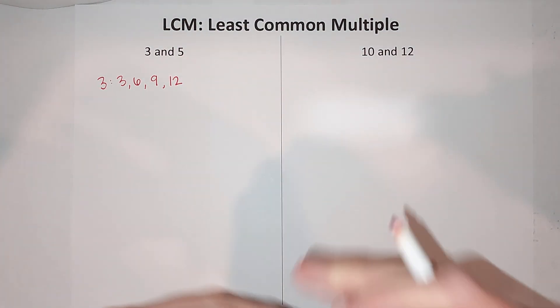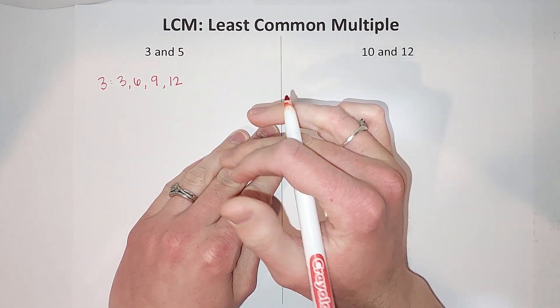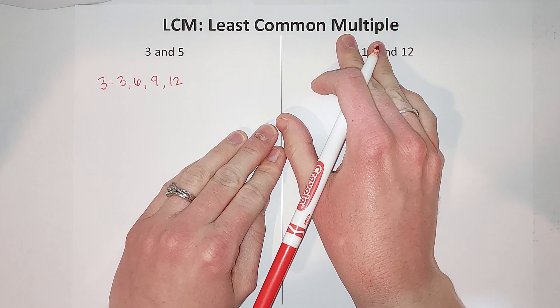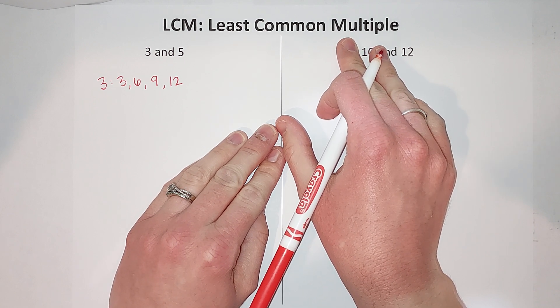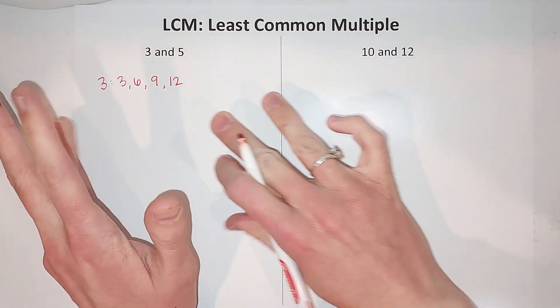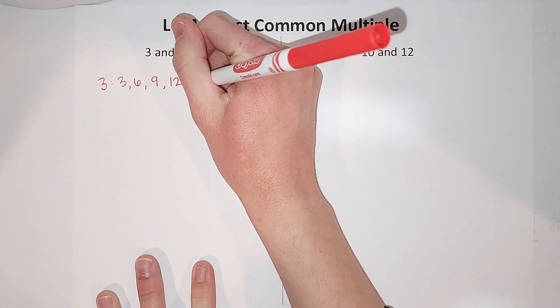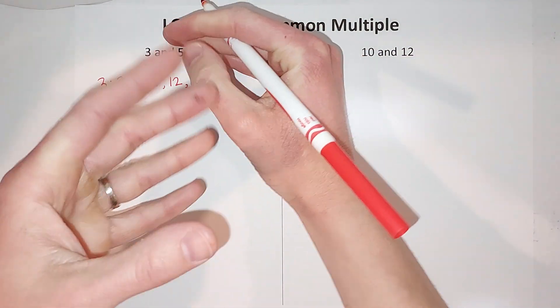All numbers have an infinite amount of multiples. You should write that down because it's a big deal. So I can't write them all out literally, so I'll just write out a few and then you might need to add more if you don't get to one that it has in common.